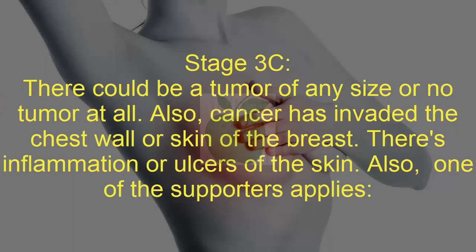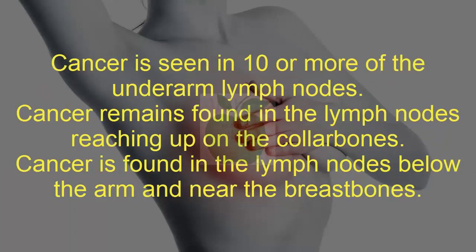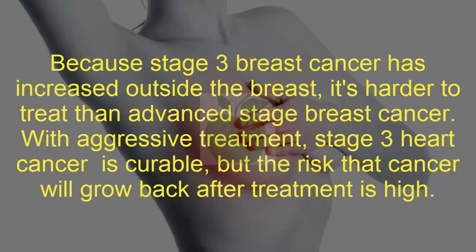In stage 3C, there could be a tumor of any size or no tumor at all. Cancer has invaded the chest wall or skin of the breast, with inflammation or ulcers of the skin. Additionally, one of the following applies: cancer is seen in 10 or more underarm lymph nodes, cancer is found in the lymph nodes reaching up to the collarbones, or cancer is found in lymph nodes below the arm and near the breastbone.